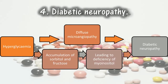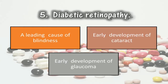4. Diabetic neuropathy. The pathogenesis of neuropathy is not clear, but it may be related to diffuse microangiopathy, or may be due to accumulation of sorbitol and fructose as a result of hyperglycemia, leading to deficiency of myoinositol. Diabetic neuropathy may affect all parts of the nervous system, but symmetric peripheral neuropathy is most characteristic. 5. Diabetic retinopathy. Diabetic retinopathy is a leading cause of blindness. Besides retinopathy, diabetes also predisposes patients to early development of cataract and glaucoma.